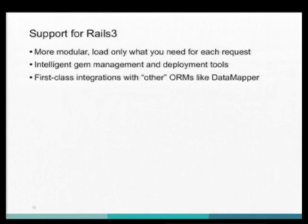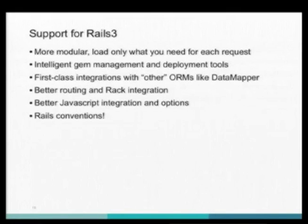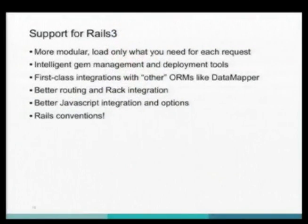You have first-class integration with other ORMs besides ActiveRecord. ActiveRecord is what everyone knows from Rails, but if you take a look at DataMapper you'll find it's very similar. You also have better routing because it uses Rack more, and more integration options with JavaScript — you can choose jQuery or even integrate Clojure if you wanted to. And you have all the Rails conventions on top of that that everyone has grown to love.